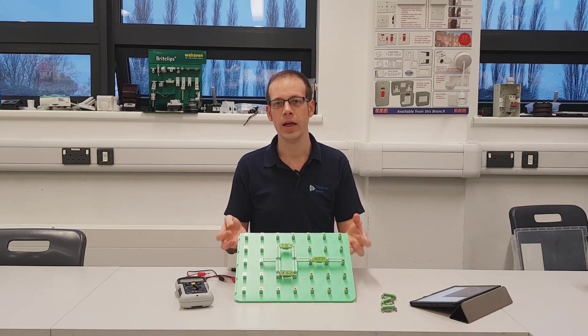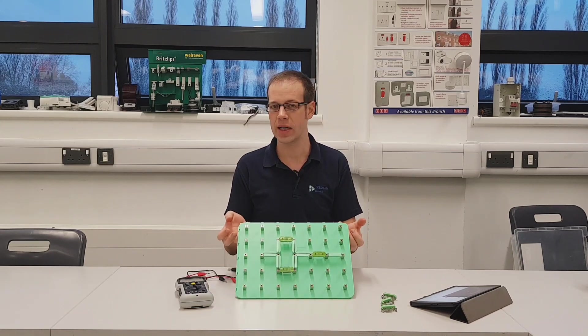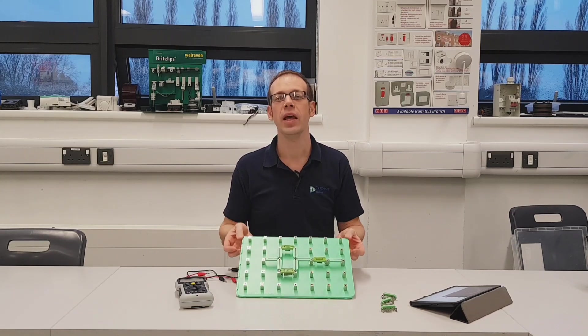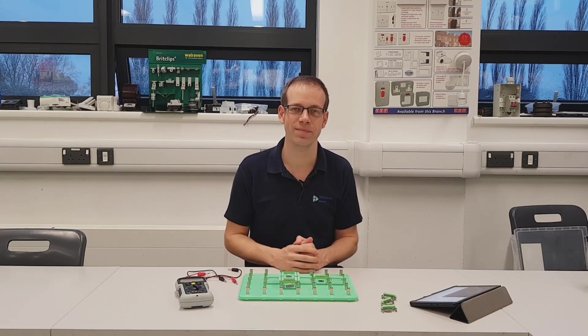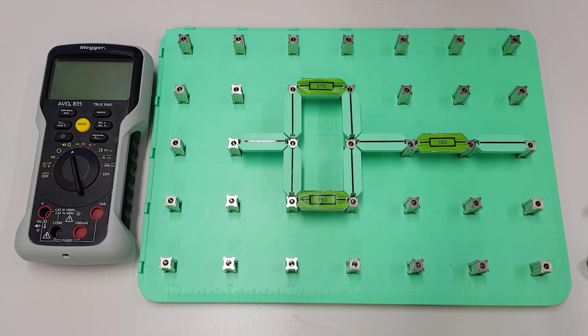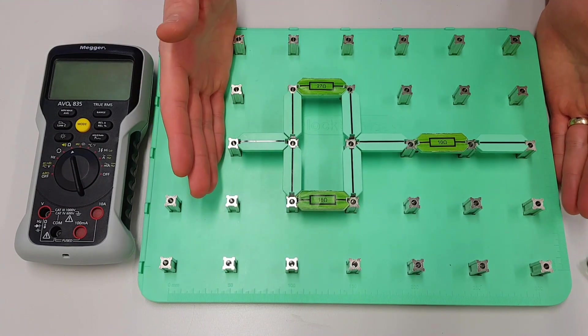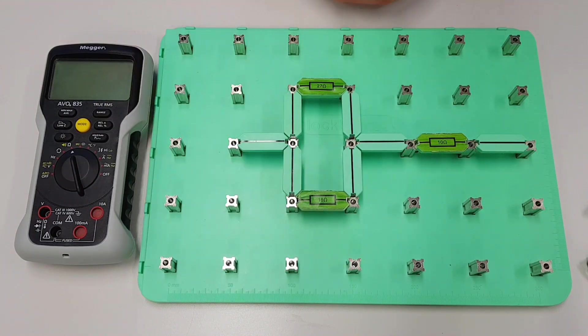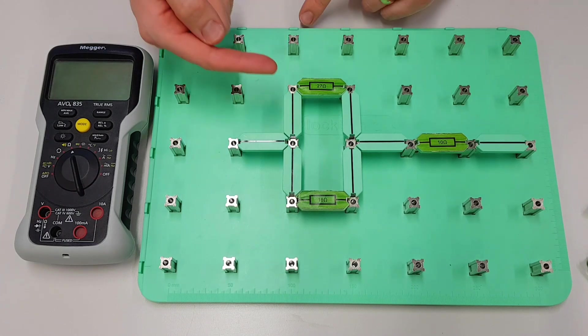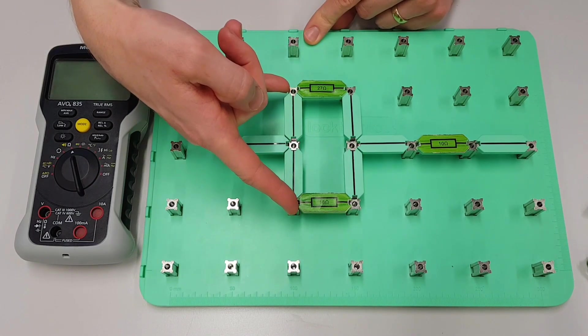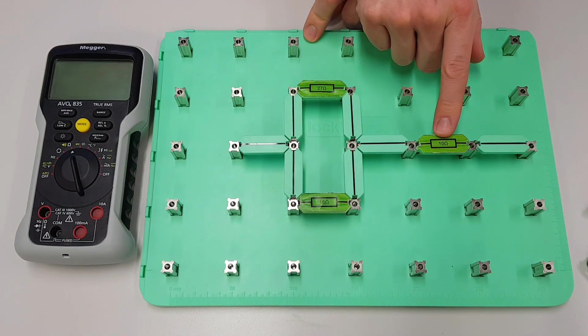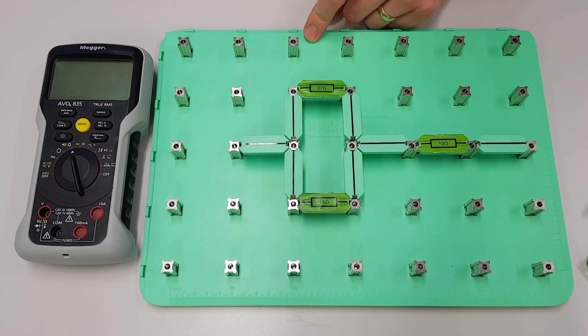So I've got here a circuit that combines elements of both a series and a parallel circuit and we're going to have a look at how we can calculate the total resistance within that setup. So as you can see I've set up a circuit here and it looks a little bit different to the circuits that we did in previous videos because we have resistors here that are connected in parallel with each other and we've got a resistor here that is connected in series with these ones.